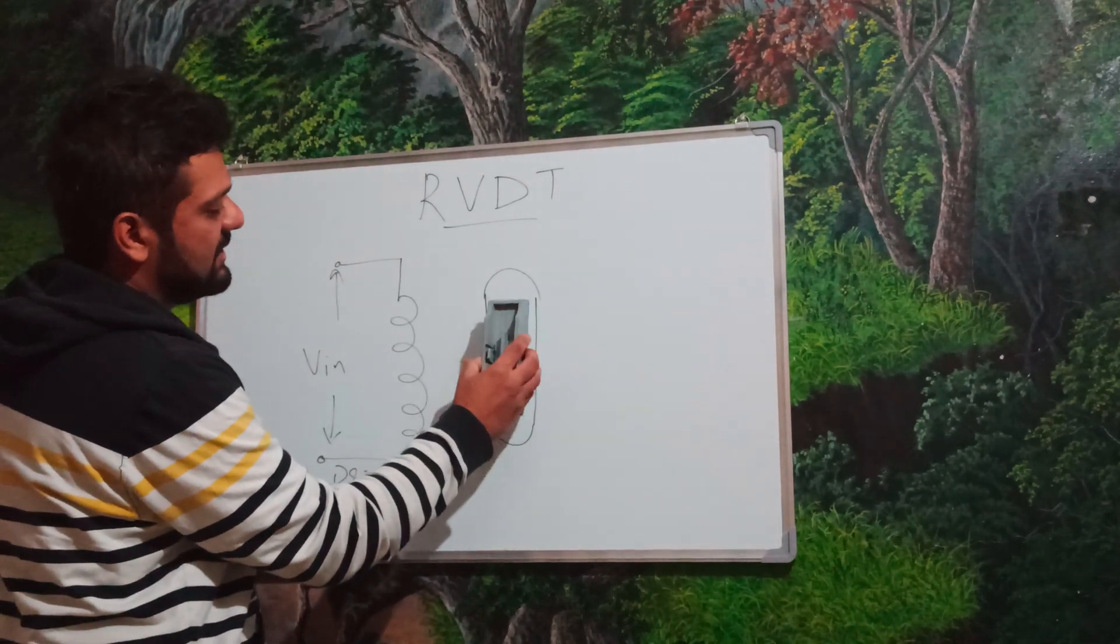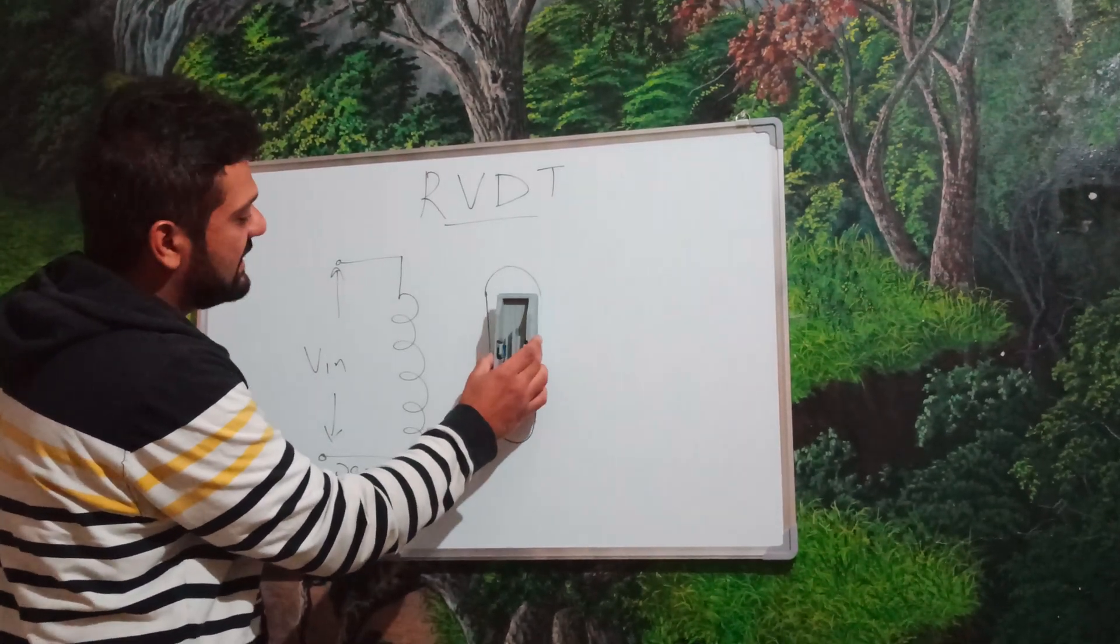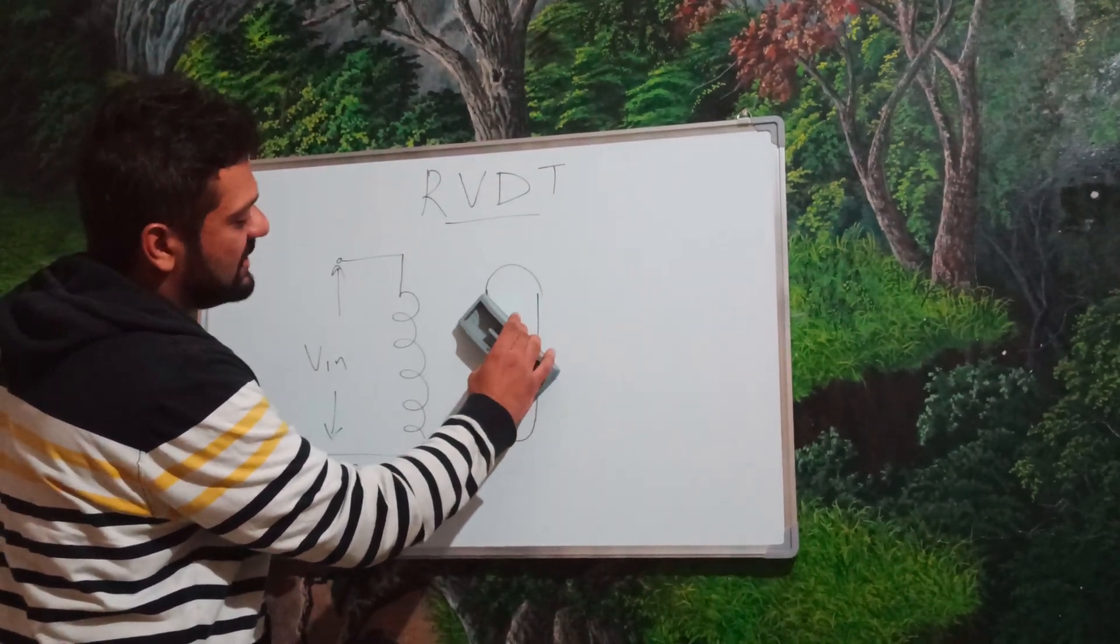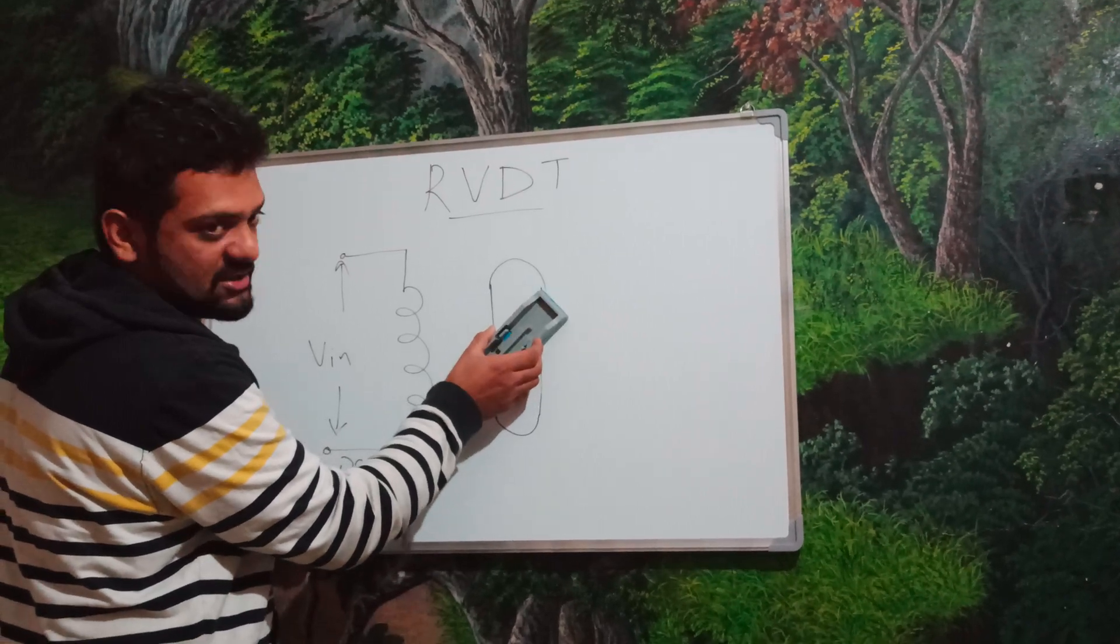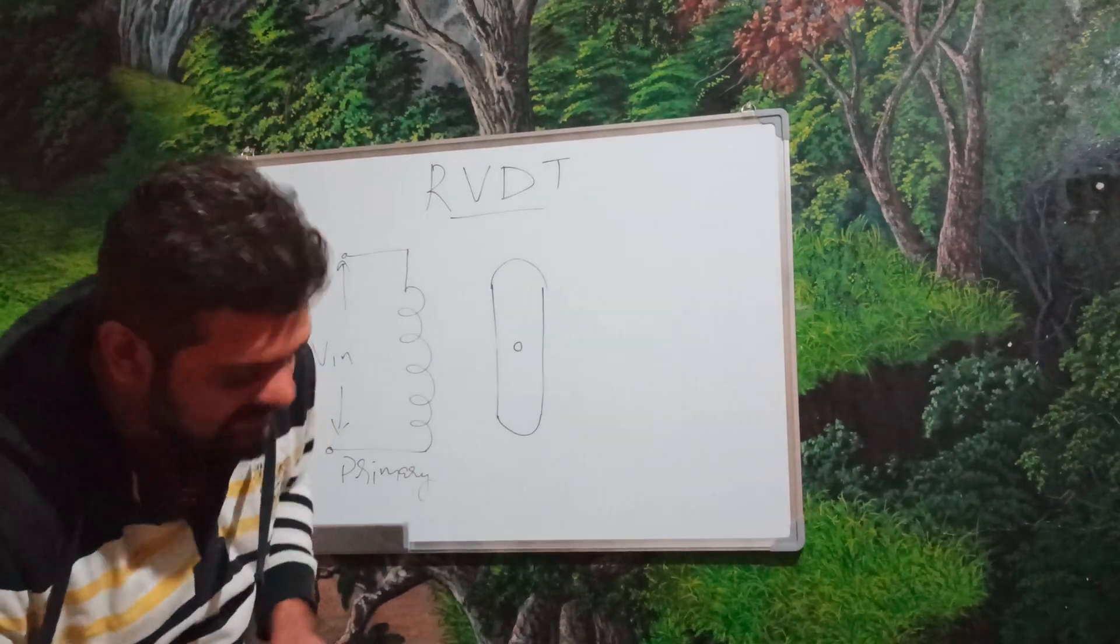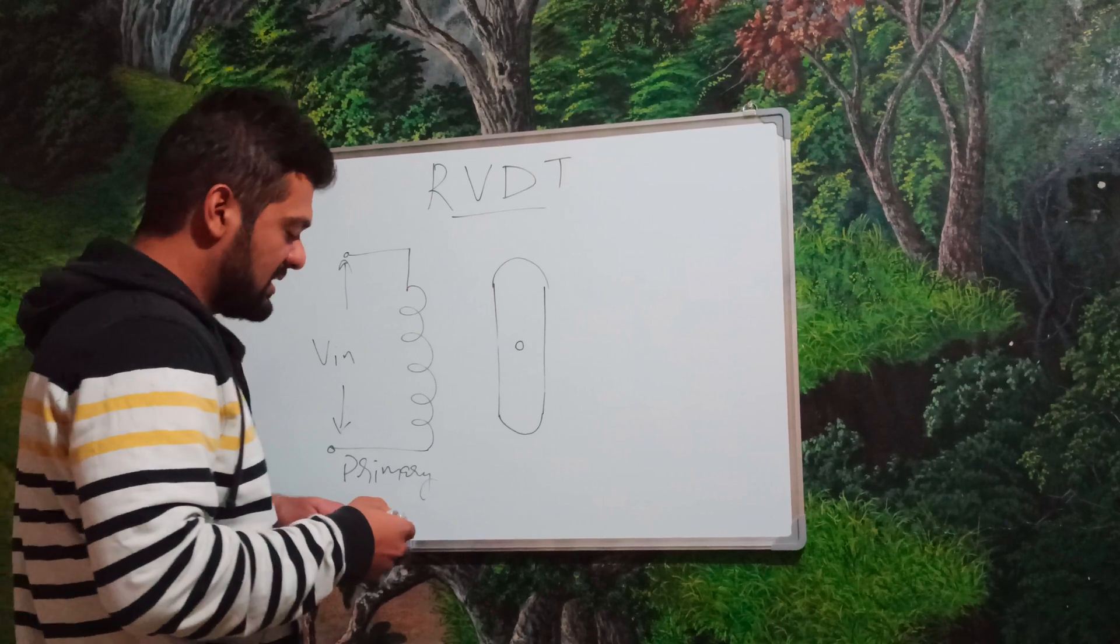If you suppose this duster over here as one of the cams, it can be moved in anti-clockwise direction or in the clockwise direction. Right now, it is at a neutral or null position.